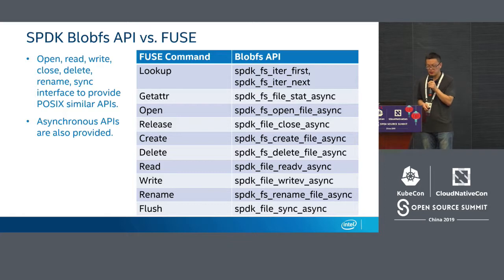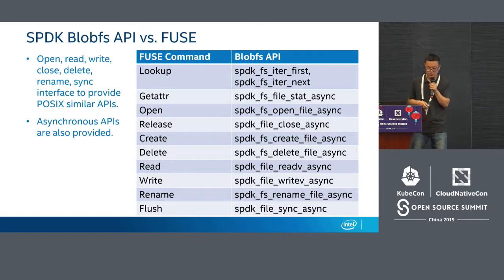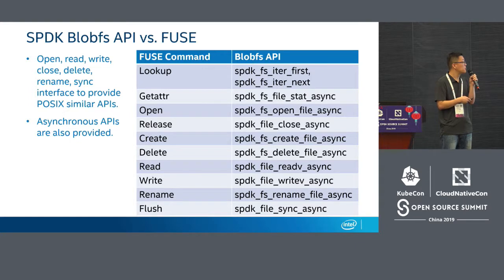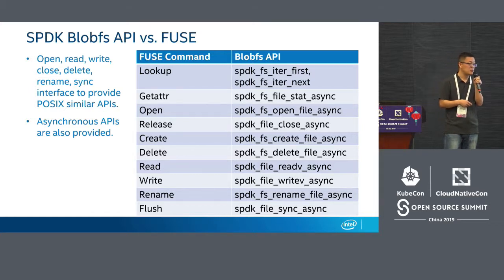I'll quickly go through this because it's very detailed. This is about the table — for FUSE, it is a different kind of request, and for BlobFS it is different kinds of APIs, so you can correspond them together. For example, for lookup, if you are going to look up a file, we have an iteration from the first file to the next file. And then getattr, open, release, create, delete, read, write, rename, flush — these are the common APIs.